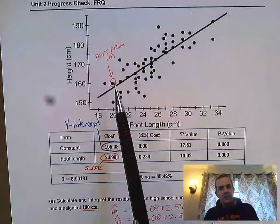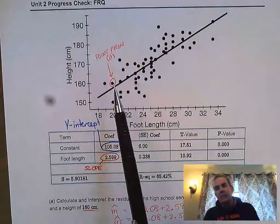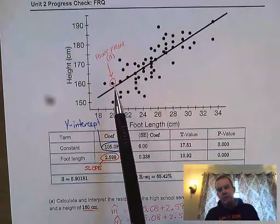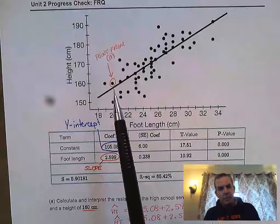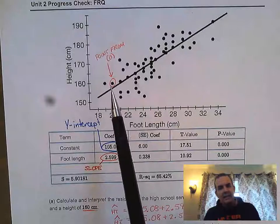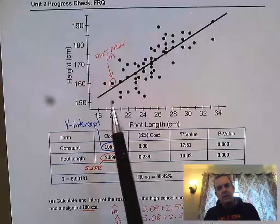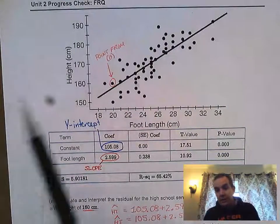The residual is the difference between what we would predict, which is on the line, and the observed value. There's a formula we're going to use, but first we need to figure out the predicted value.